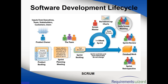The Scrum Master is similar to the PM, while the product owner is more like your SME. The Scrum Master has little or no authority, unlike the PM — he or she is more of a coordinator or facilitator.